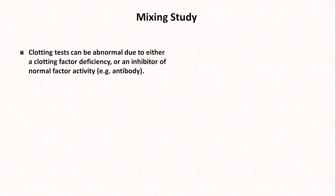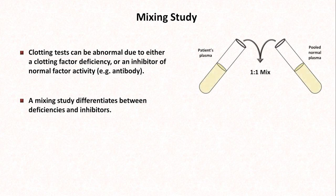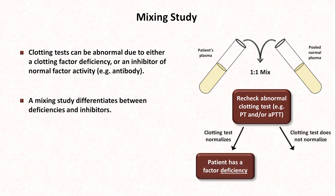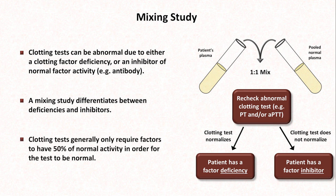Another concept from a prior video that I want to briefly revisit is the mixing study, originally discussed in lesson four. Clotting tests can be abnormal due to either a clotting factor deficiency or due to an inhibitor of normal factor activity, such as an antibody. A mixing study differentiates between deficiencies and inhibitors. For a patient who has an abnormally long clotting test — either PT or PTT — the lab creates a one-to-one mixture of the patient's plasma and pooled normal plasma from donors. If the test has normalized, the patient has a factor deficiency. If it does not normalize, the patient has a factor inhibitor. This works because clotting tests generally only require factors to have 50% of normal activity in order for the test to be normal.